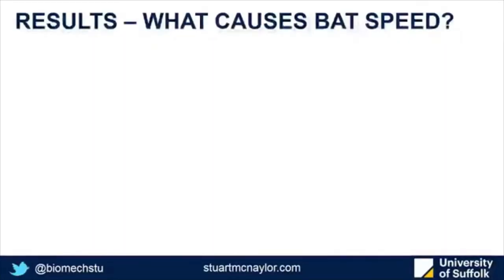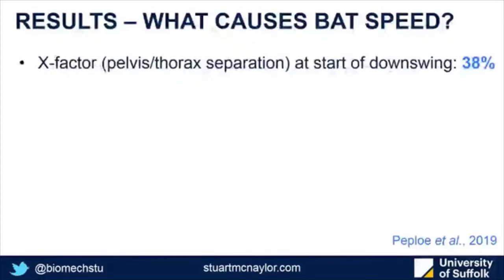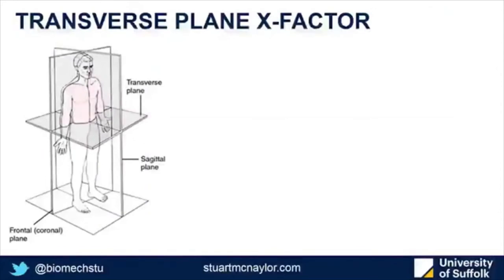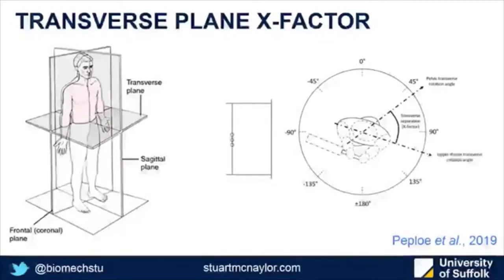So what did we find? The single most important parameter of technique explaining variation in bat speed — why some people swing the bat faster or slower than others — was something called X-factor: the separation between the pelvis and the thorax in the transverse plane. The bigger this X, the faster players swing the bat.